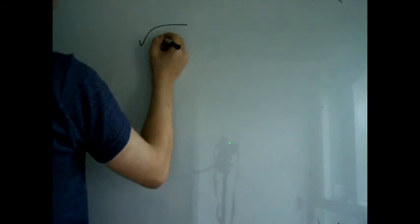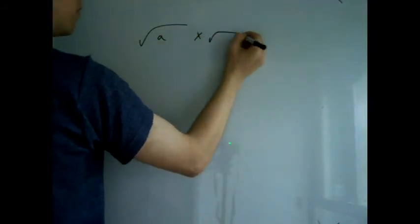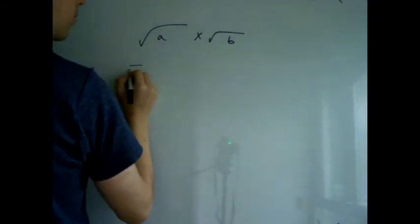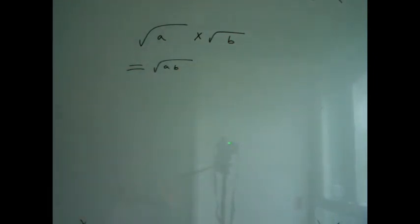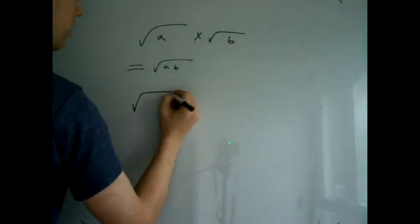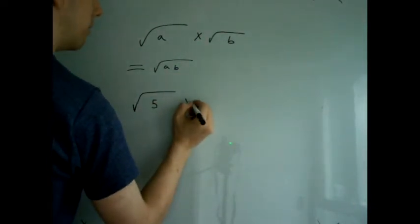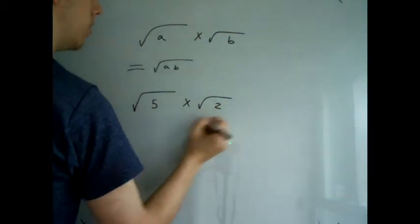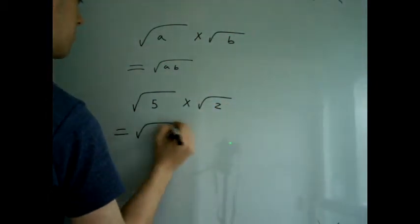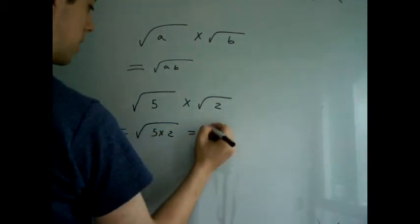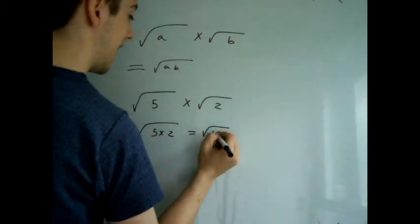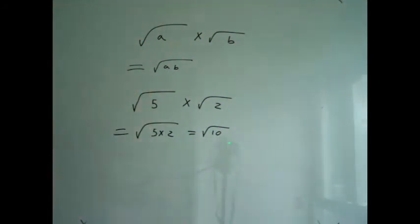The square root of A times the square root of B equals the square root of AB. Now, in practice, it's a lot simpler than it looks. All it's saying is the square root of 5 times the square root of 2 equals the square root of 5 times 2, which equals the square root of 10. OK, there, that simplified it easy.